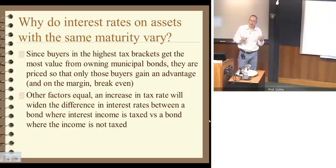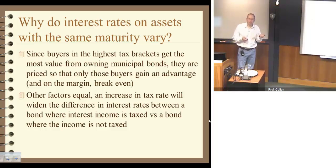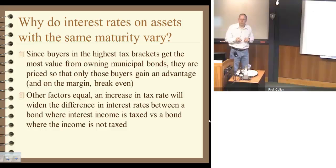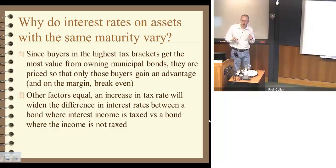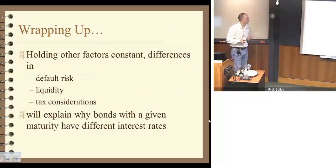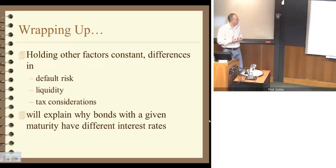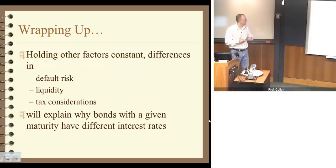The value of this tax exemption is that people in relatively high tax brackets place the most value on being exempt from taxes, so they are willing to pay the most for tax-exempt bonds. They drive the price up and, therefore, the interest rate down. Other factors equal, as tax rates rise, that will widen the difference between the interest rate on a tax-exempt bond and a bond that is not tax-exempt. Wrapping up, we've found three different reasons why bonds with the same maturity will have different interest rates: default risk, liquidity, and tax considerations.